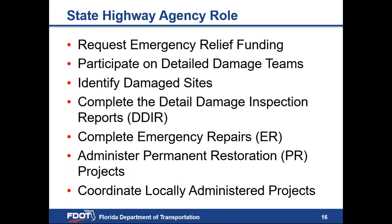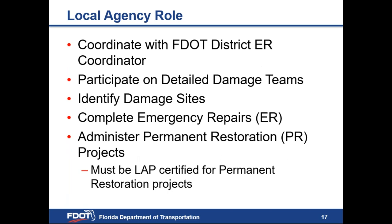It is important that you as a local agency provide damage information to the district as quickly as possible following an emergency event so it can be incorporated into the summary. Following an emergency event, FDOT is responsible for requesting ER funding, participating on detailed damage teams, completing the DDIR, completing emergency repairs on state highway facilities, administering permanent repair projects, and coordinating locally administered projects. Each local agency is responsible for coordinating with FDOT, participating on detailed damage teams, identifying damage sites, completing emergency repairs, and administering permanent repair projects. A local agency must be LAP certified to administer a permanent repair project.